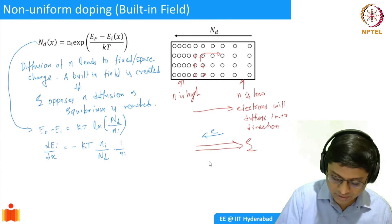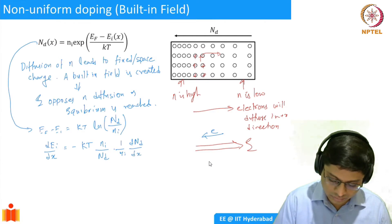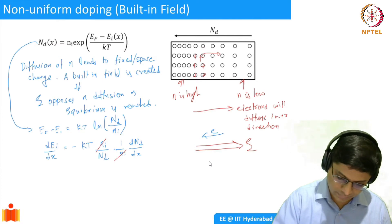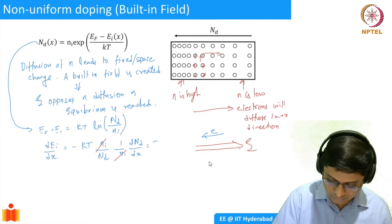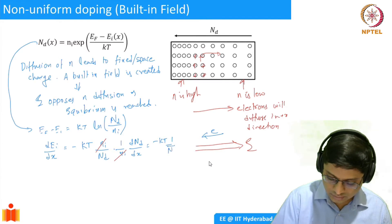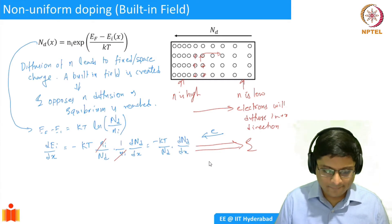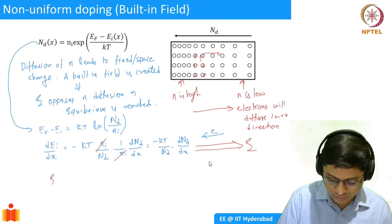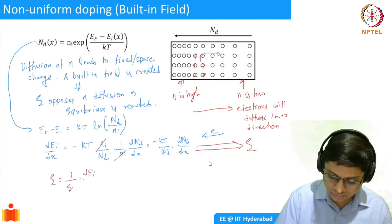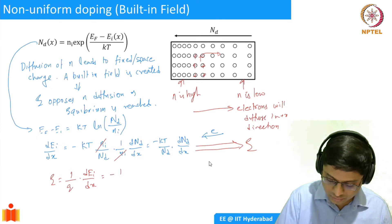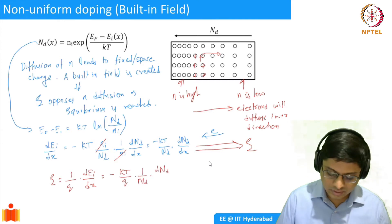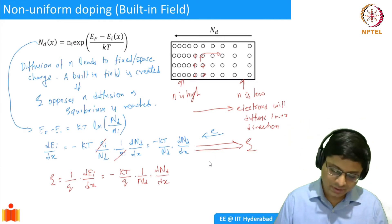Taking dE/dx, this gives dN_D/dx, and N_i cancels out. So the electric field E equals (1/q) times dE_I/dx, which equals negative (kT/q) times (1/N_D) times dN_D/dx. This is the expression for the built-in electric field.